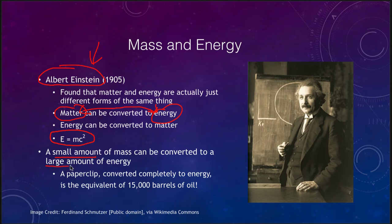The speed of light is a very big number, so a very small amount of mass can be converted into a very large amount of energy. For example, if we could take a paperclip and convert it completely to energy, that would be the equivalent of 15,000 barrels of oil.